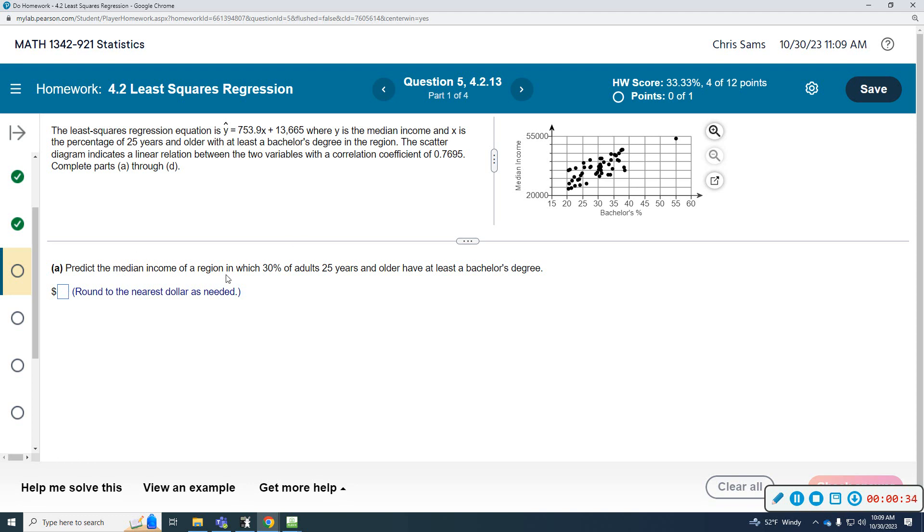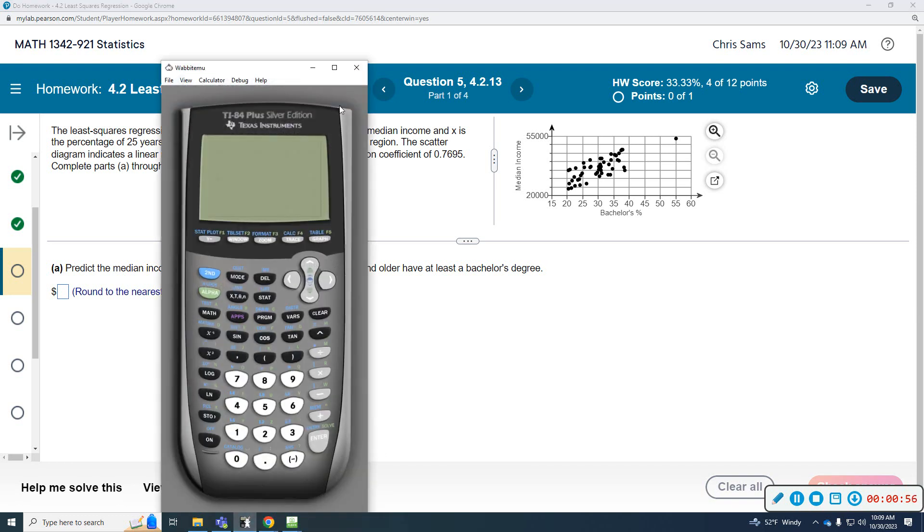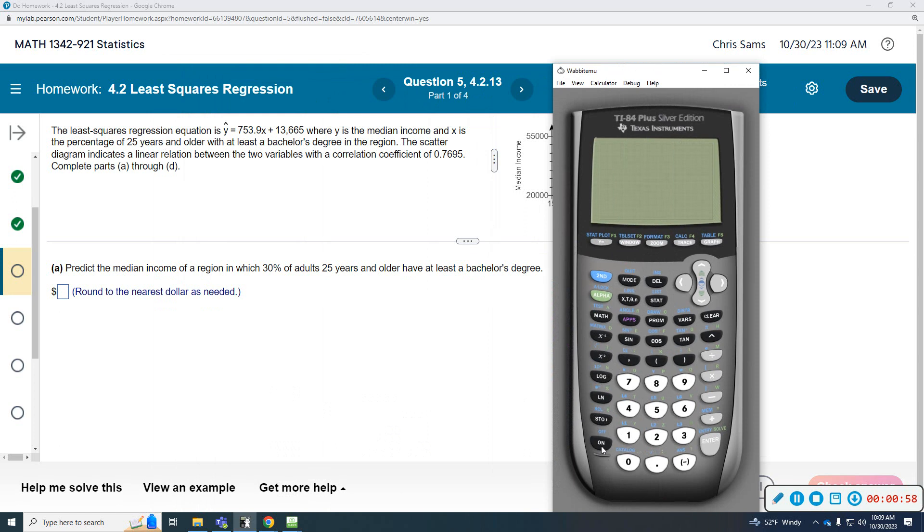We're going to predict the median income in the region with 30% of adults 25 years or older having a bachelor's degree. So x is the percentage that has that degree. What we're going to do is plug in 30 for x and then we're going to get a value. We're going to use the equation to predict a value. I'm just going to do it in my calculator.